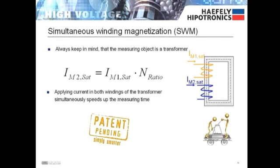The 2293 utilizes our unique simultaneous winding magnetization method where current is applied to both windings of the transformer simultaneously. This speeds up the measuring time.